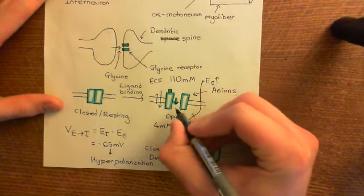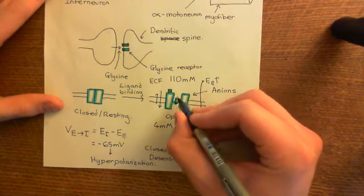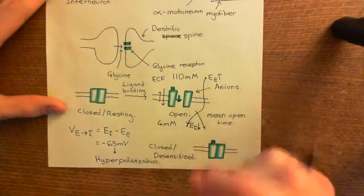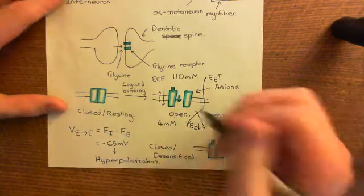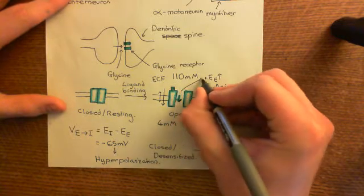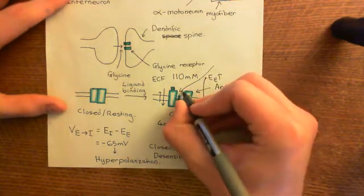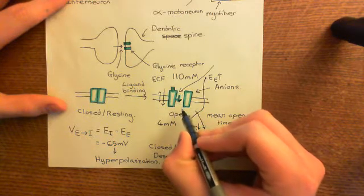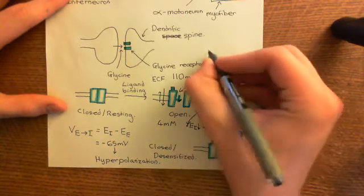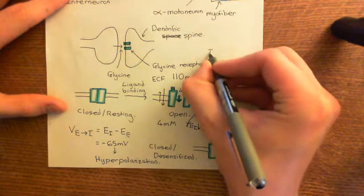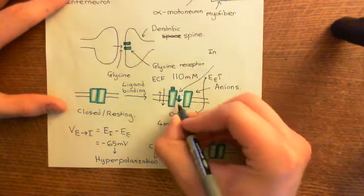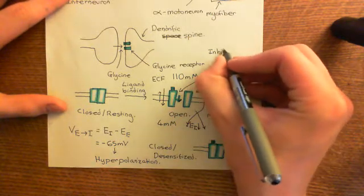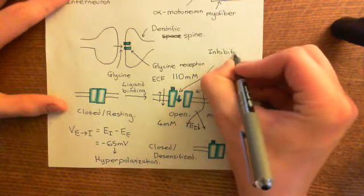When you open these glycine receptors, you are allowing negatively charged particles to move into the cell. When charged particles move, it's known as a current. This current is inhibiting the alpha motor neuron — it's stopping it from firing an action potential. So, this current of chloride anions moving into the cell through the glycine receptor is what's known as an inhibitory postsynaptic current.